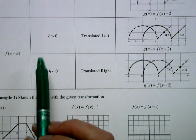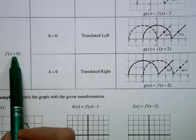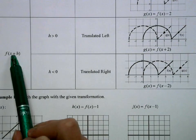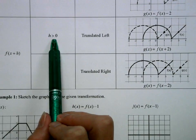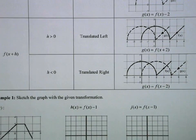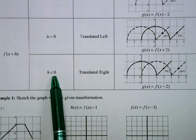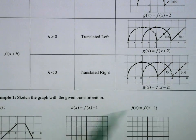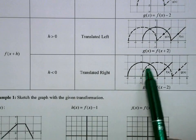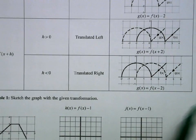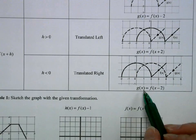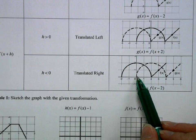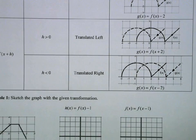If rather than adding to the function we add the value directly to x, this is going to affect the graph horizontally. If that value is bigger than 0, it's going to move the graph to the left. If the value we are adding is less than 0 — like x minus 2 — it's going to move the graph to the right. That's a little counterintuitive, but if you plug in 0, g of 0 is going to be equivalent to f of negative 2.